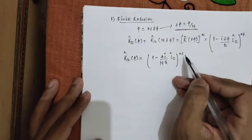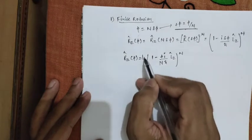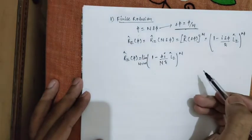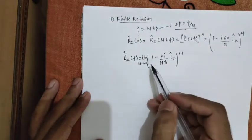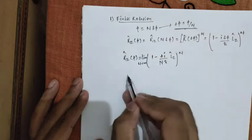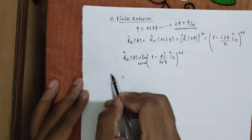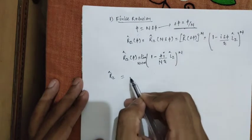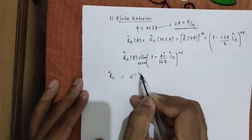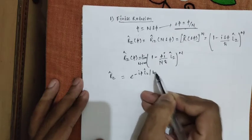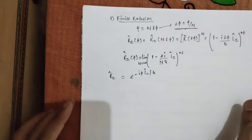And this n limit goes from n tends to infinity. On expanding this expansion up to the limit n, we came to know that this is nothing but e to the minus i phi Lz by h bar. This is nothing but exponential expansion.